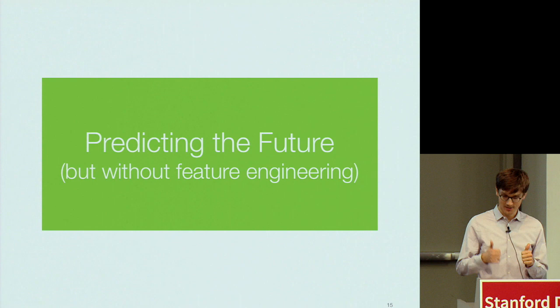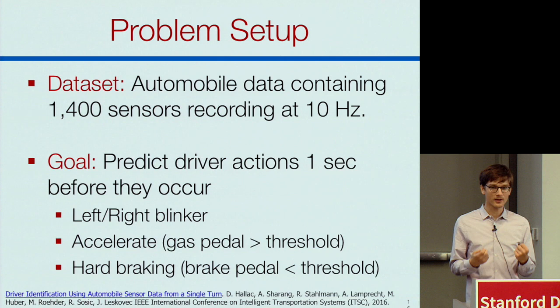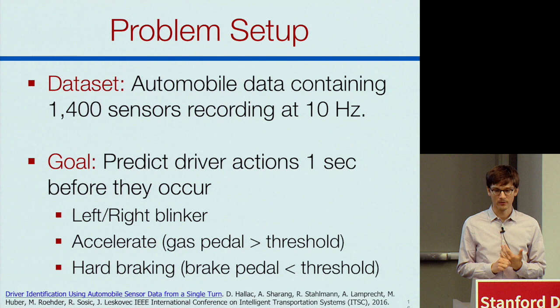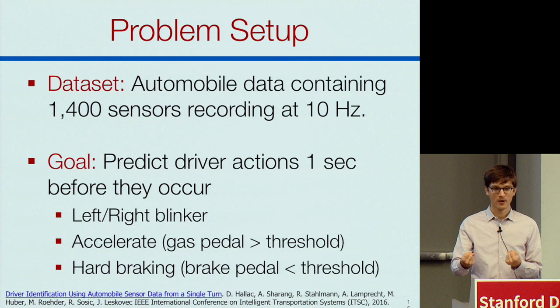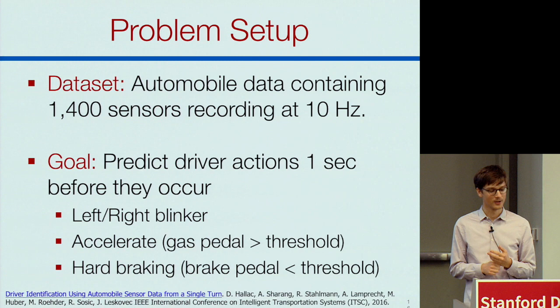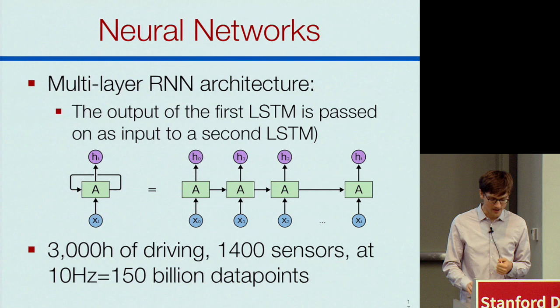The second application is: can I use this time series to make predictions about the future without doing feature engineering? Applied to cars, I want to predict what you will do a second from now — specifically safety-critical events. I'd really think of this as a detection task: detect whether you'll turn on the blinker before you actually do it, detect whether you'll accelerate quickly so the engine can be prepped, or detect that you're about to slam the brake pedal so the car can start responding.